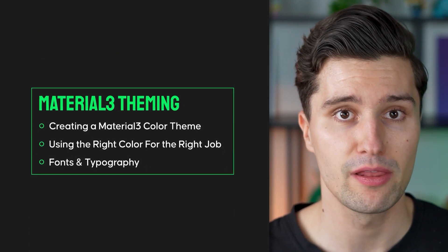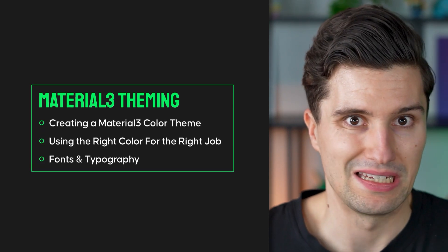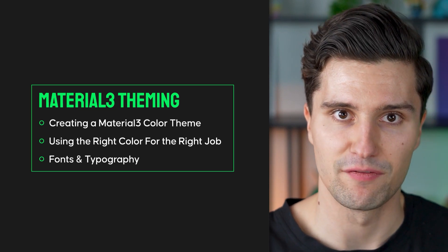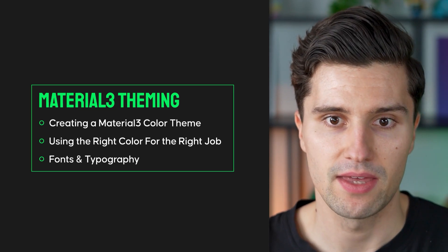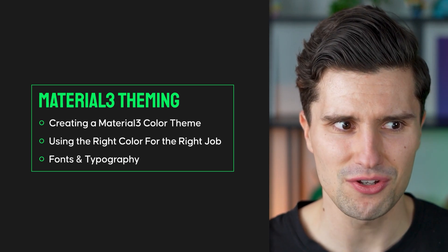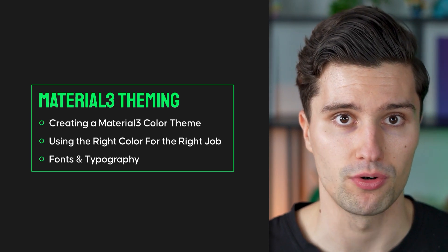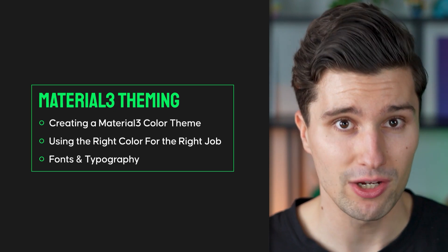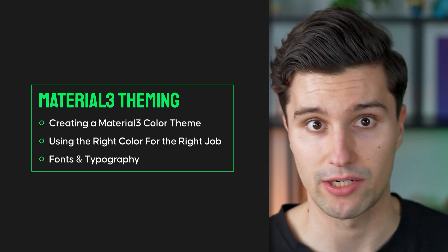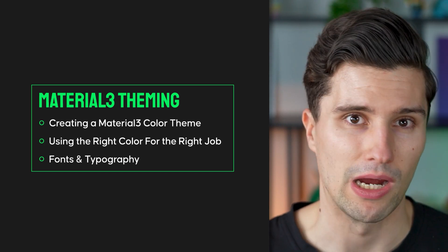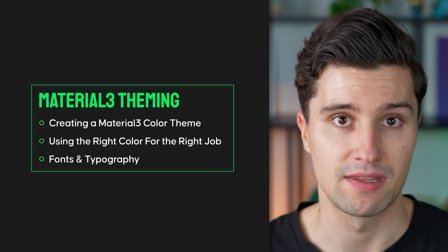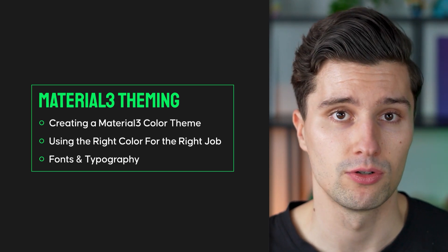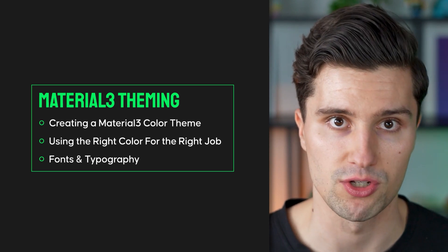Section eight goes into Material 3 theming — how you can create a solid color theme for your app, and also how you can take existing Figma mockups from a designer and translate them into Material 3 colors. That's not obvious for most people, especially when the designer's initial design doesn't use typical Material 3 UI components but you still need to assign colors like background, surface, and primary. I'll give you a clear strategy for translating design colors into Material colors, and the same for fonts — how you can declare universal font styles and reuse them across your app.